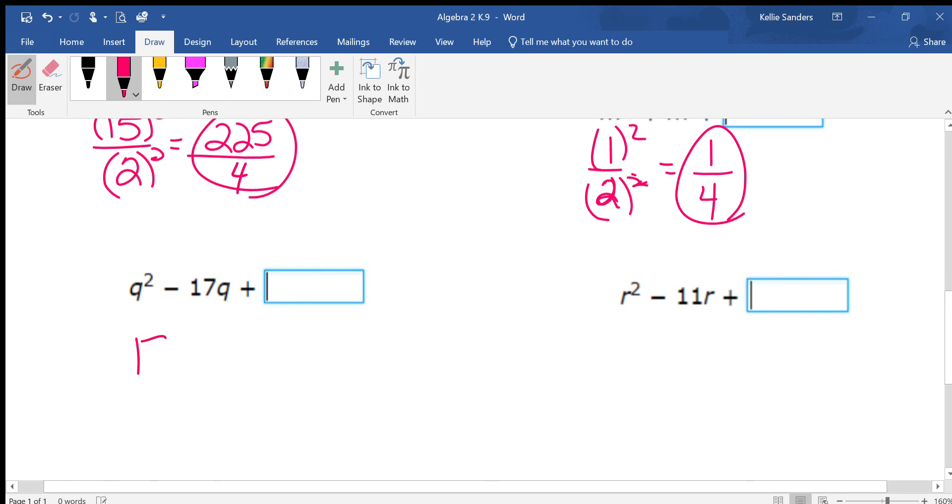Take 17. Put it over 2. It doesn't reduce. Square both. And I think that's 289. It's been a while since I've done that. Yeah. 289 over 4.